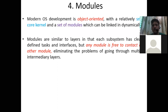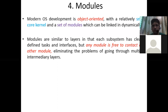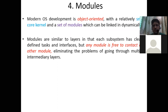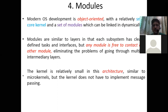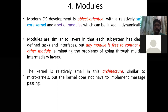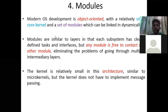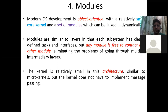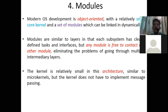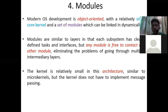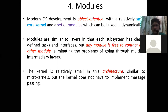In this way we are making the microkernel more lightweight, so all these services can be explicitly solved by the modules. The kernel is relatively small in this architecture, similar to microkernels, but the kernel does not need to implement message passing, as modules can communicate directly with each other. We make the kernel small just to make it more efficient, so it can focus on essential things and provide less turnaround time.